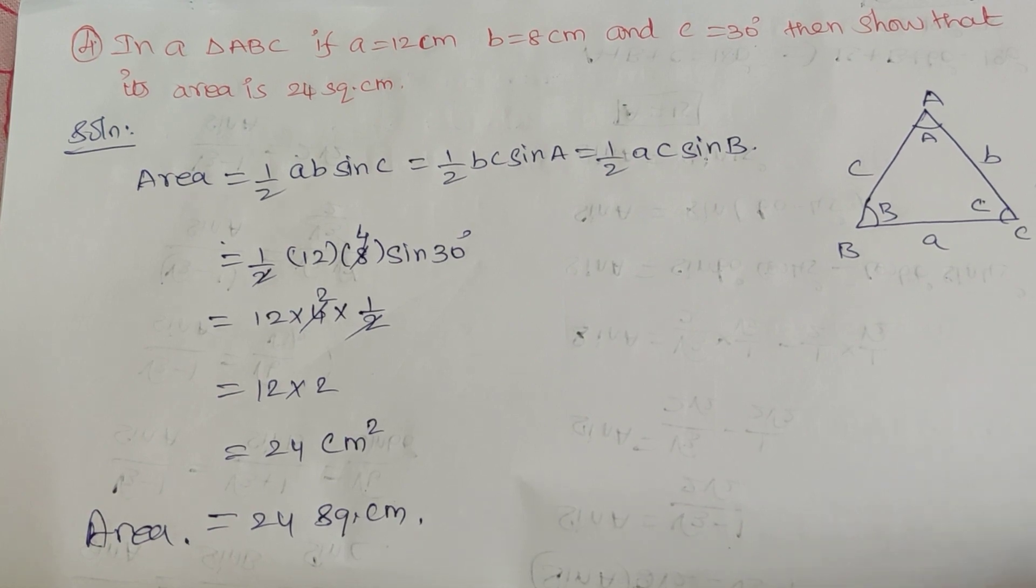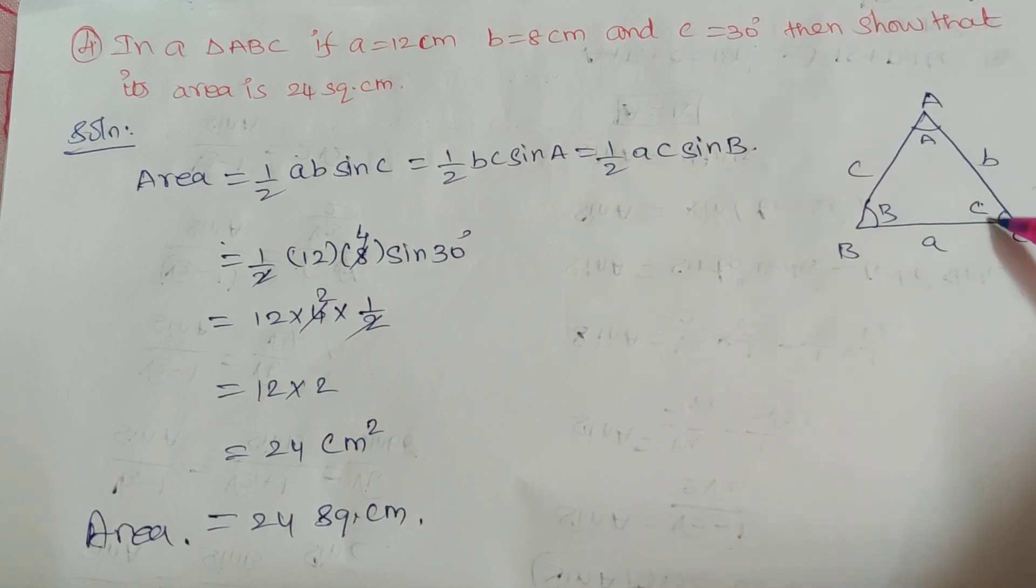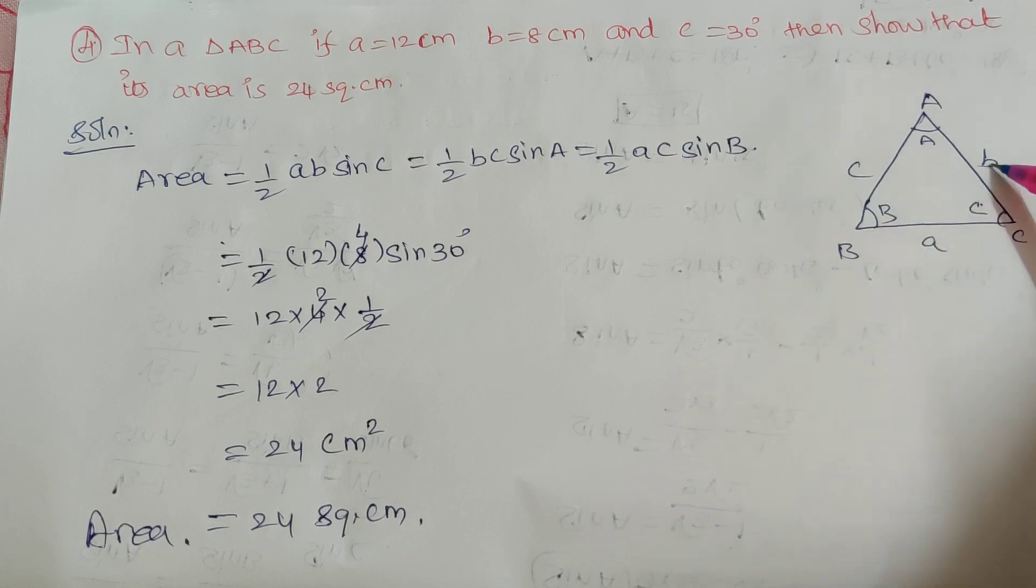First we have to consider the triangle ABC. So the angle A, the angle B, the angle C. A opposite side small a, B opposite side small b, C opposite side small c.